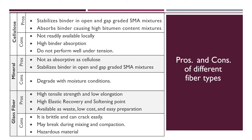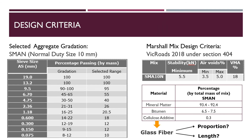In our experiments, we used glass fibers considering their availability in Sri Lanka. The design criteria of the mix uses a selected aggregate gradation of normal duty size 10 mm aggregate gradation, extracted from the WICROAD specification 2018. The Marshall mix design criteria is as shown in the table. The normal composition of this stone mastic asphalt mix has mineral matter of around 94%, bitumen of about 7%, and a fiber addition of 0.3%. Since we are going with glass fiber, we needed to determine the appropriate proportion and length.